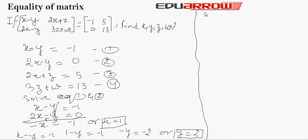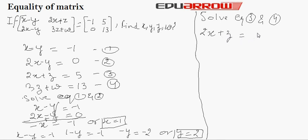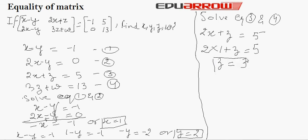Similarly, solving equation 3: 2x plus z equals 5. Substituting x equals 1 gives 2 times 1 plus z equals 5, so 1 plus z equals 5, giving z equals 3.